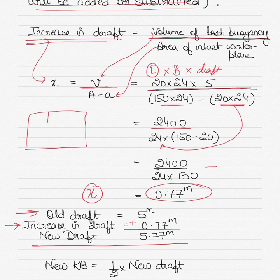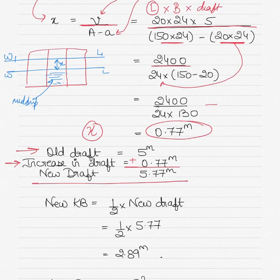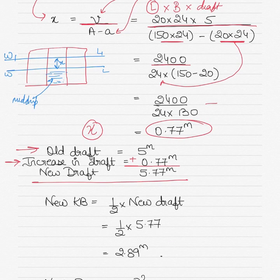To show this visually: WL here was the initial draft and this is the midship compartment. Now it starts to take in water, so the ship sinks to a new draft W1L1. The distance x that was calculated is the increase in draft, so you add x to the old draft to get the new draft.